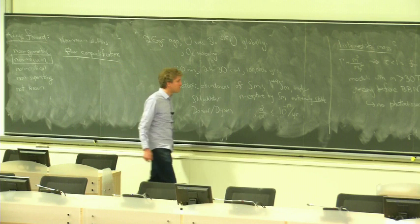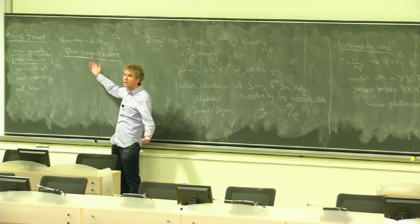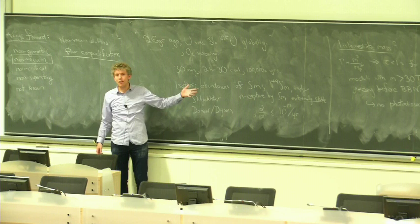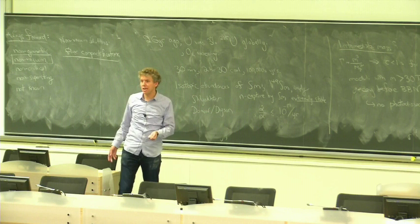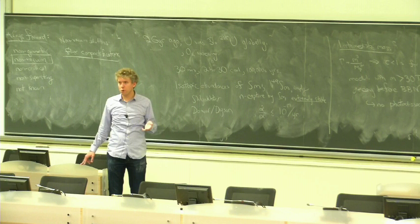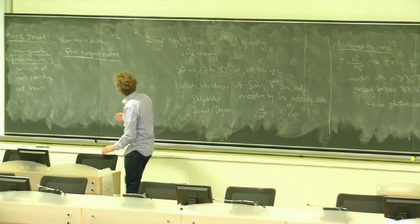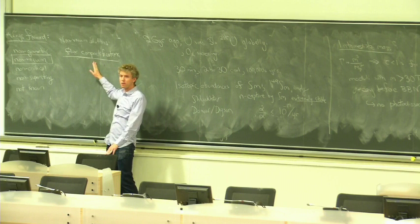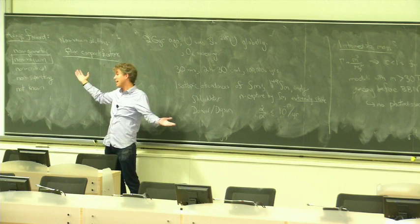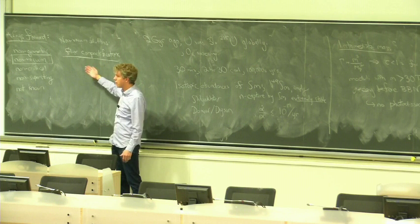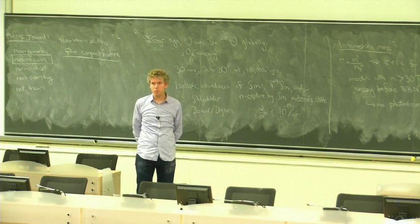In flux compactifications, moduli get mass not from perturbative corrections but by invoking a new configuration in which I have introduced stress energy corresponding to a quantized object — some number of units of flux. As a result, the equations being solved are rather different, and there the moduli automatically have mass. Why not just take Calabi-Yau compactifications and study loop corrections to the Kähler potential? Philosophically that's great, but technically we're rather bad at computing those loop corrections.